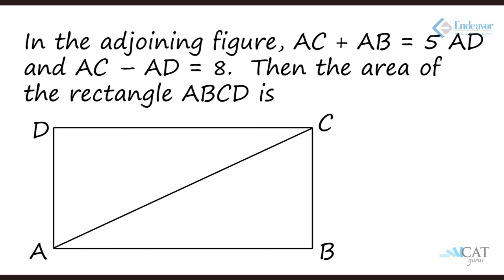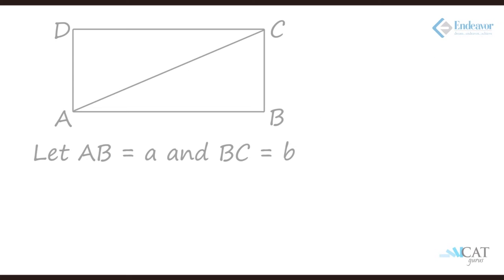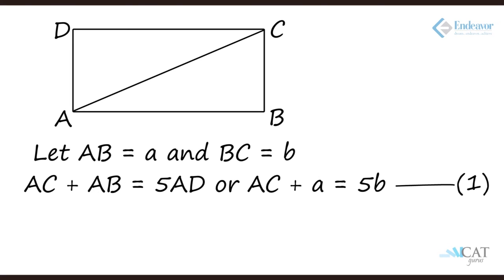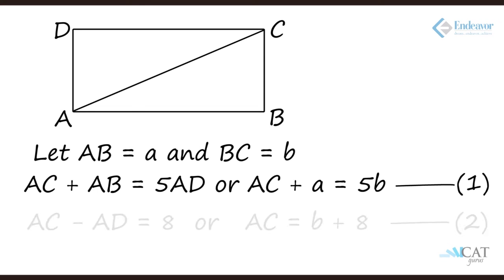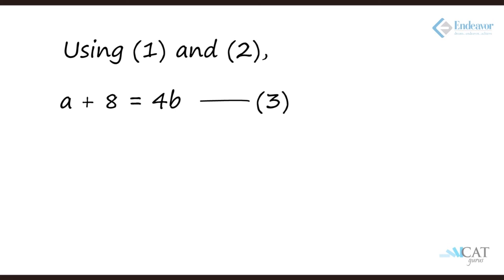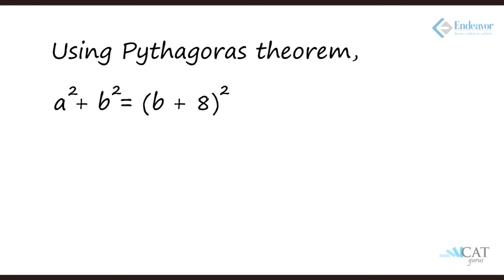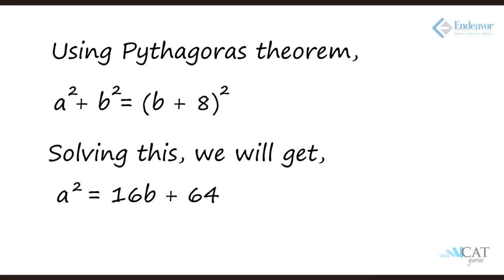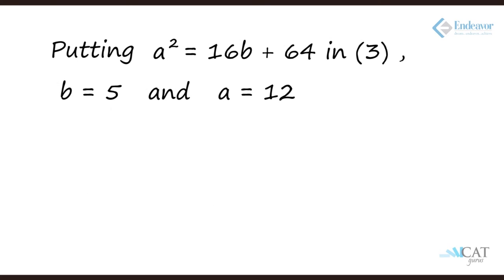Next problem: In rectangle ABCD, AC plus AB equals 5AD and AC minus AD equals 8. Let AB equal A and BC equal B. From the equations: AC plus A equals 5B, and AC equals B plus 8. Solving gives A plus 8 equals 4B. Using the Pythagorean theorem, A squared plus B squared equals (B plus 8) squared, which reduces to A squared equals 16B plus 64. Solving the system gives B equals 5 and A equals 12, so the area of the rectangle is 5 times 12, which equals 60.